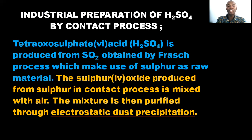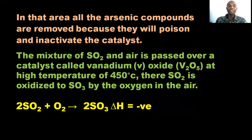Tetraoxosulphate-VI acid, H₂SO₄, is produced from sulfur dioxide obtained by the Frasch process, which makes use of sulfur as raw material. The sulfur dioxide produced from sulfur is mixed with air in the contact process. The mixture is then purified through electrostatic dust precipitation, where arsenic compounds are removed because they would poison and inactivate the catalyst used in the contact process. That catalyst is vanadium pentoxide (V₂O₅).